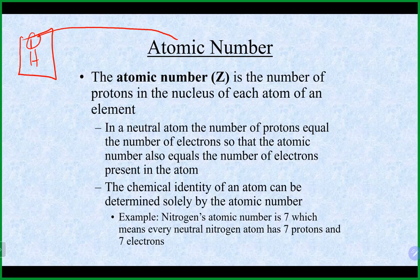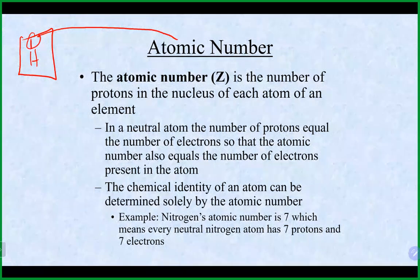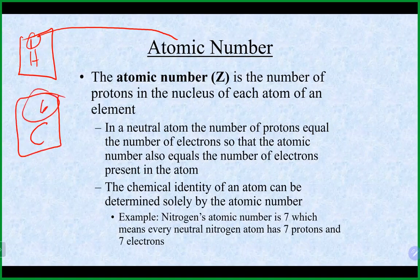For example, carbon has six protons. Only carbon can have six protons — you'll never find an oxygen with six protons because oxygen has eight protons. If you change the number of protons, you change what element it is. Every single element can be identified by its atomic number.